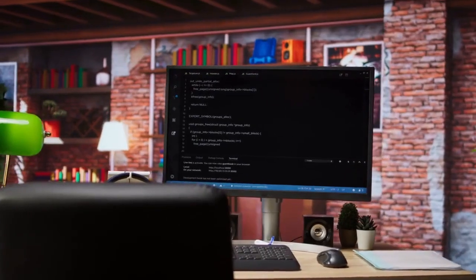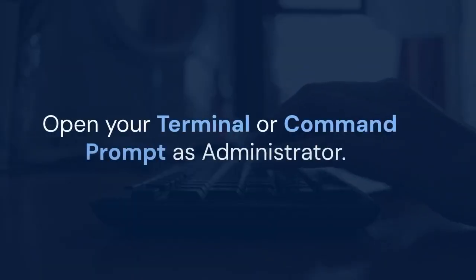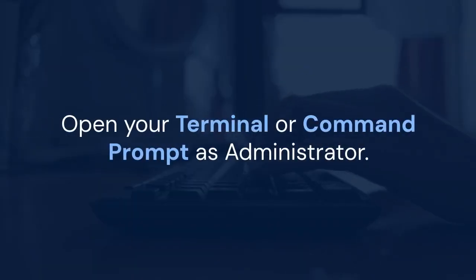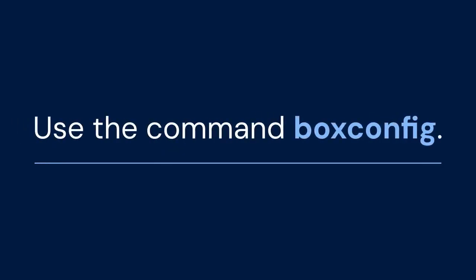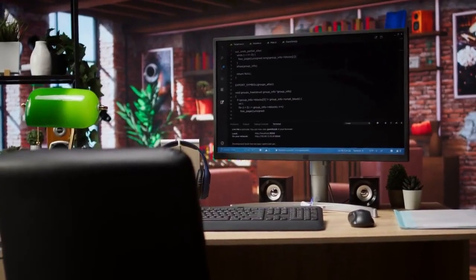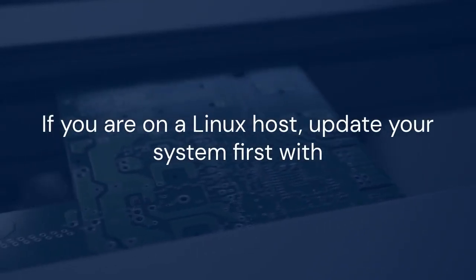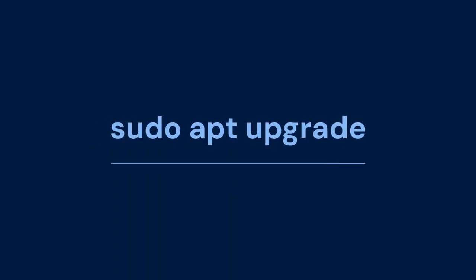Now let's explore rebuilding the kernel modules. Open your terminal or command prompt as administrator and use the command vboxconfig. This command recompiles the VirtualBox kernel modules and is especially helpful after a kernel update. If you are on a Linux host, update your system first with sudo apt update and sudo apt upgrade, then run the vboxconfig command.